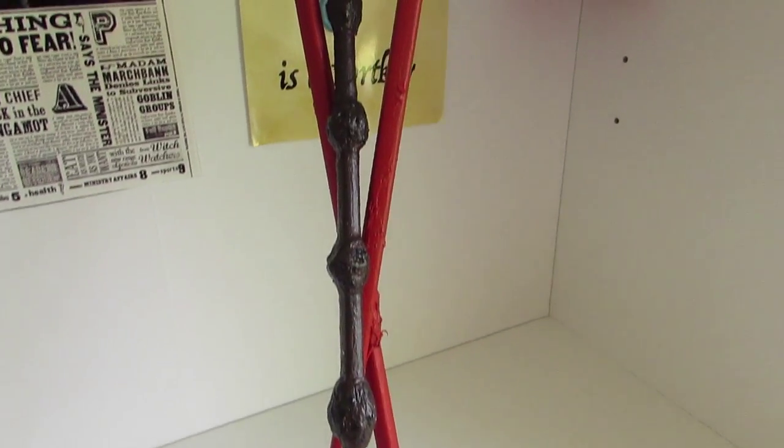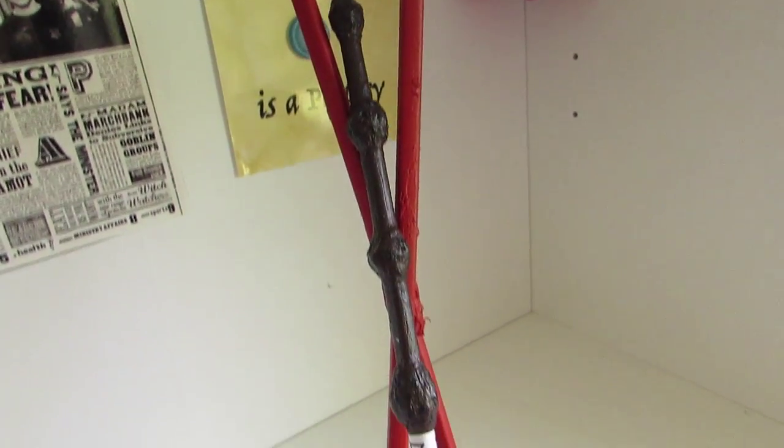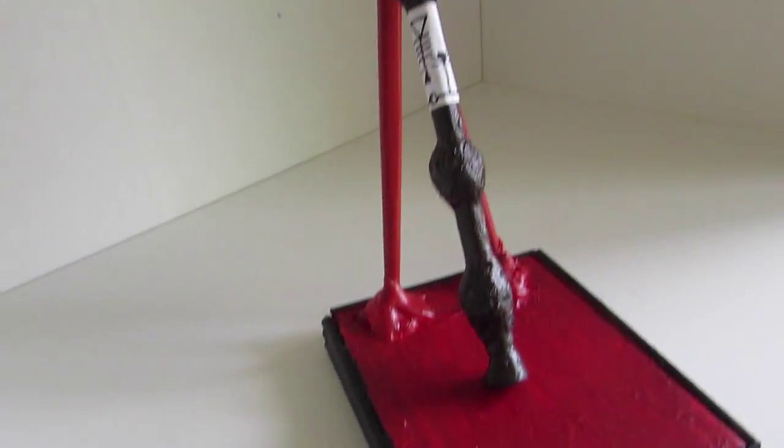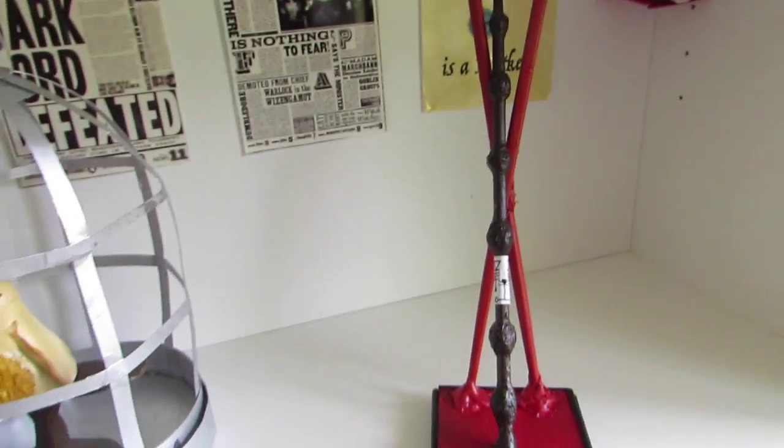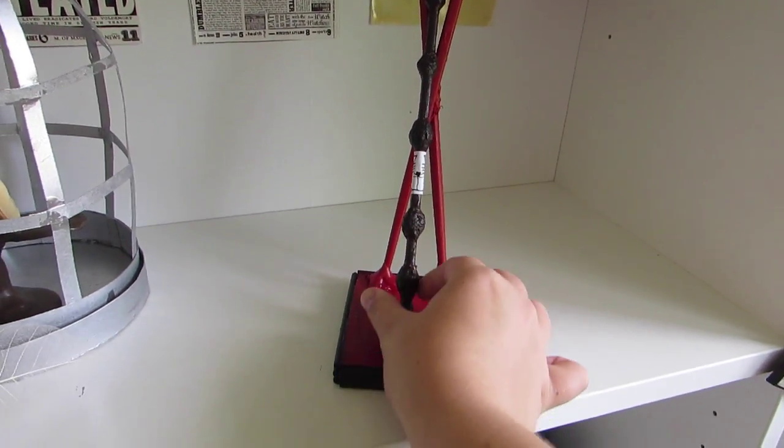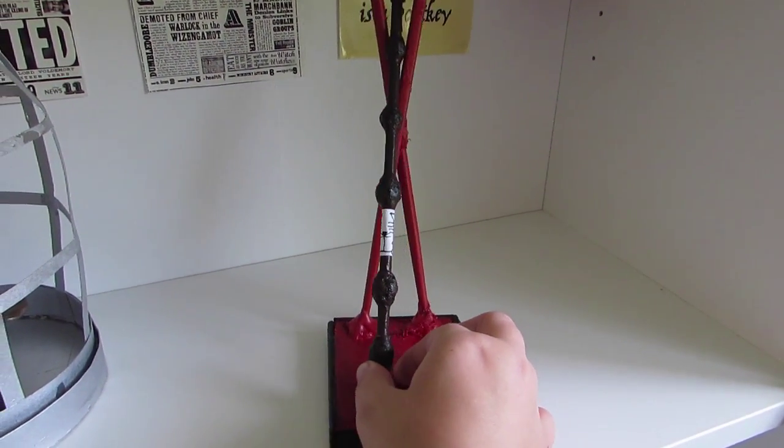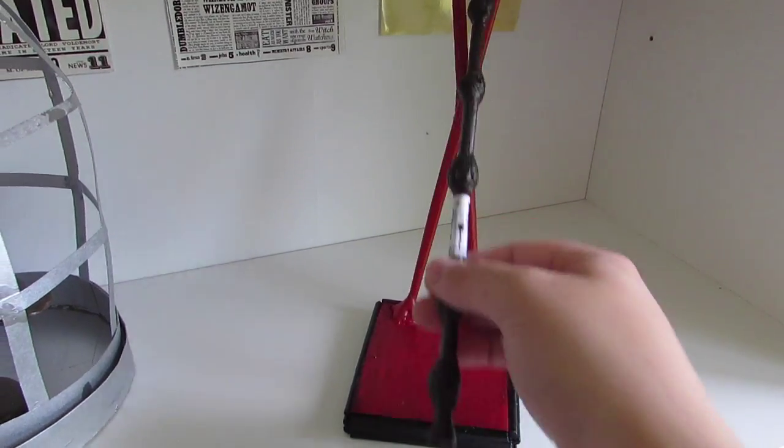So here is my stand sitting on my shelf to display my wand. I made the Elder Wand from Harry Potter. If you would like to see how I made this, there is a tutorial on my channel so go check that out if you'd like to have a go. I think it looks really cool. The wand sits in the stand really nicely. I struggled to put it back in because I was looking through the camera. But I'm really happy with how it turned out.